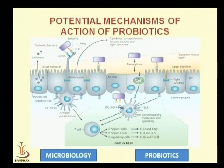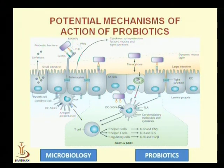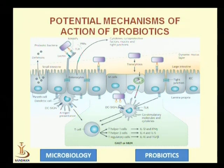Probiotic microorganisms can also interact with immune cells: T cells can be activated through the interaction of probiotic microorganisms with dendritic cells. Particular ligands present on probiotic microorganisms are called microorganism-associated molecular patterns (MAMPs), which are recognized by toll-like receptors present on dendritic cells. Upon signal transduction, dendritic cells transduce signals to T cells, which can then differentiate into T-helper 1, T-helper 2, or T-regulatory cells, producing various cytokines.